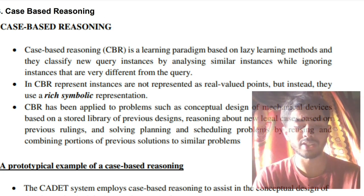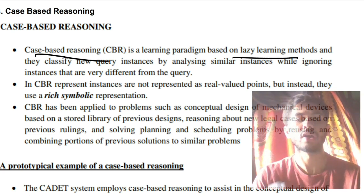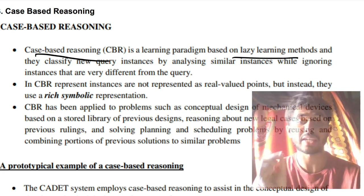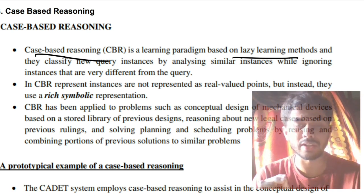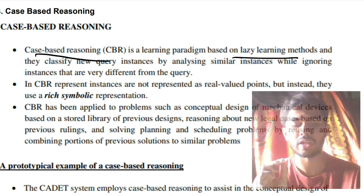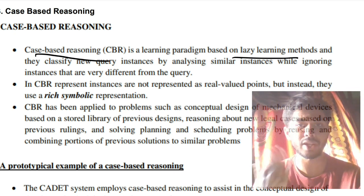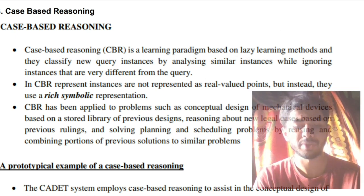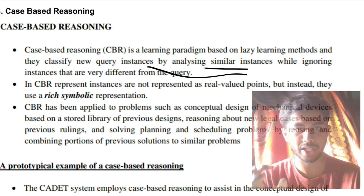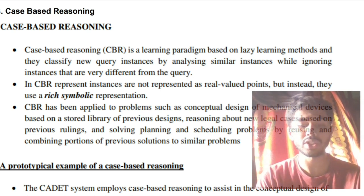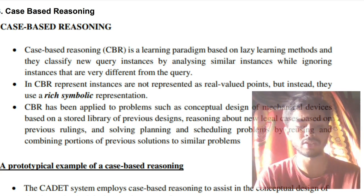Those examples you have to write here, and some of the key points you have to write: case-based reasoning is a lazy learning algorithm. What do you mean by lazy learning? KNN is also lazy learning, remember this. Lazy learning means it will just take the values and store them with itself. It will not compute anything. That is called lazy learning. Here, it will take all the cases and keep them with itself. It will not calculate anything. And it will be calculating based on similar instances; it will be classifying and forming a new case. It will be using two things: rich symbolic representation and a library of previous designs which will be stored. These three points you have to write.